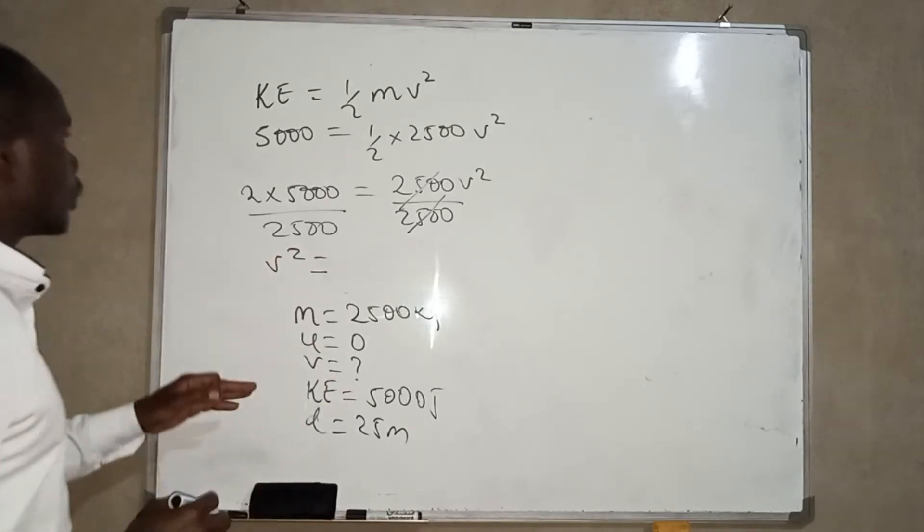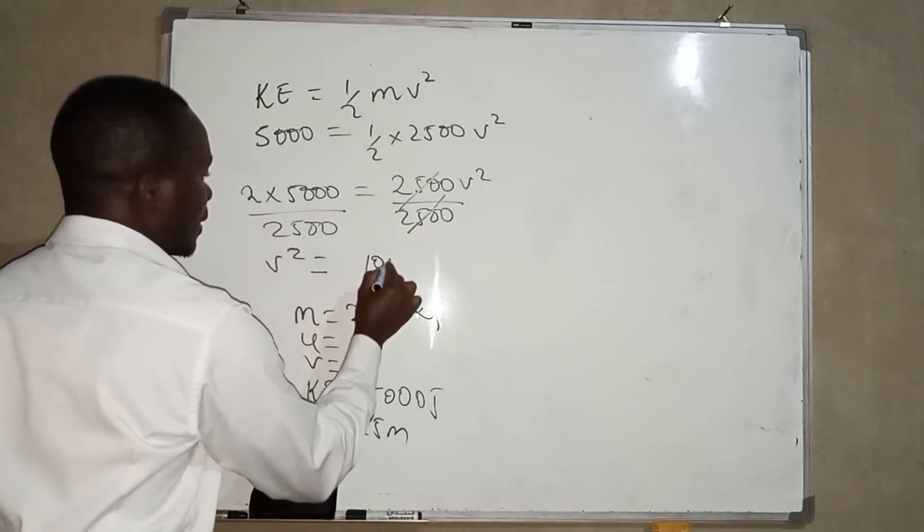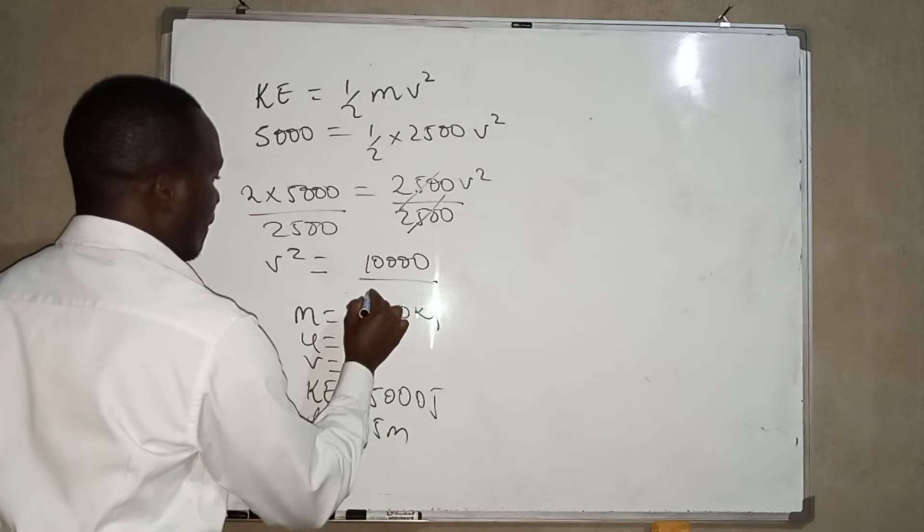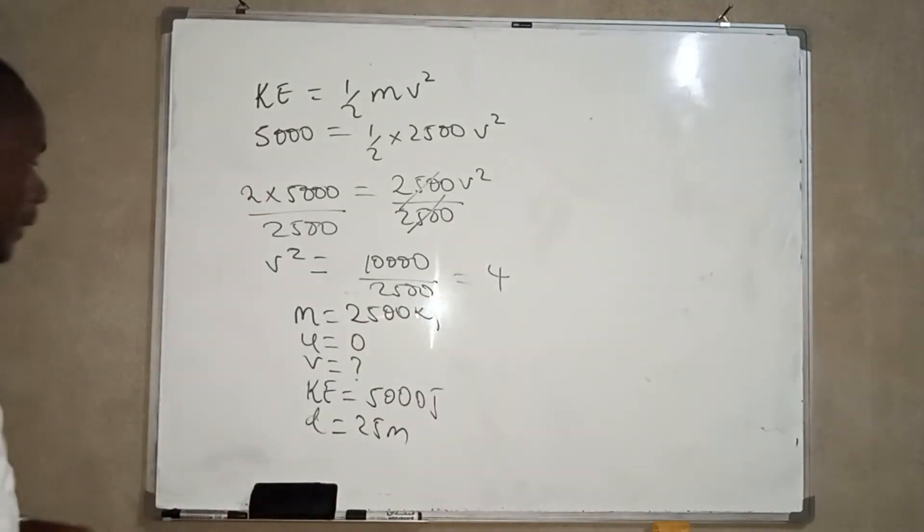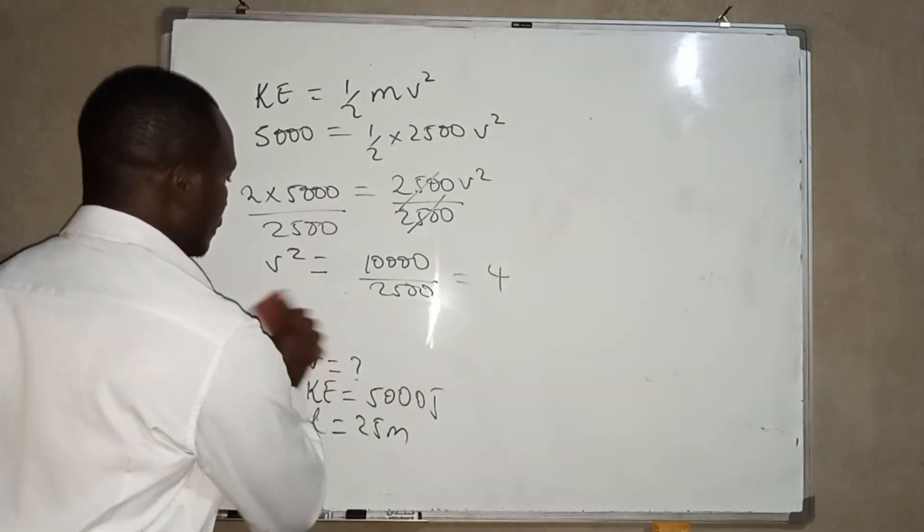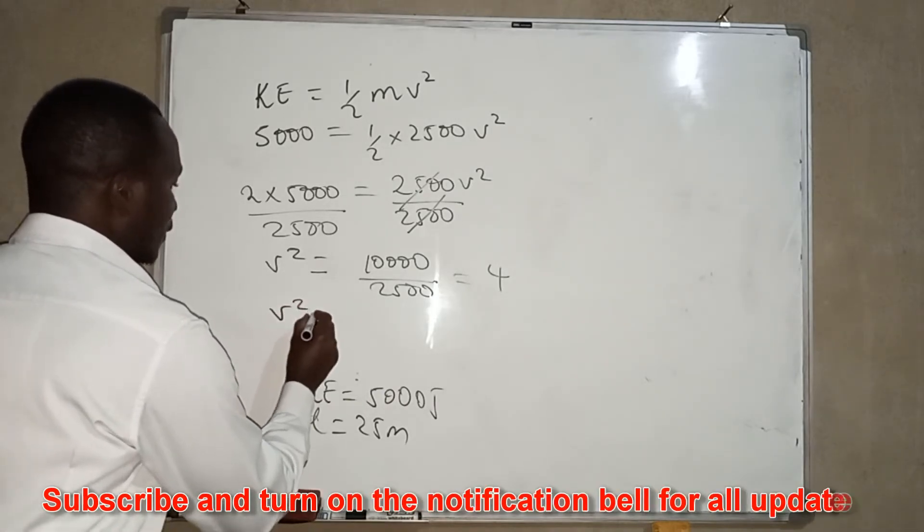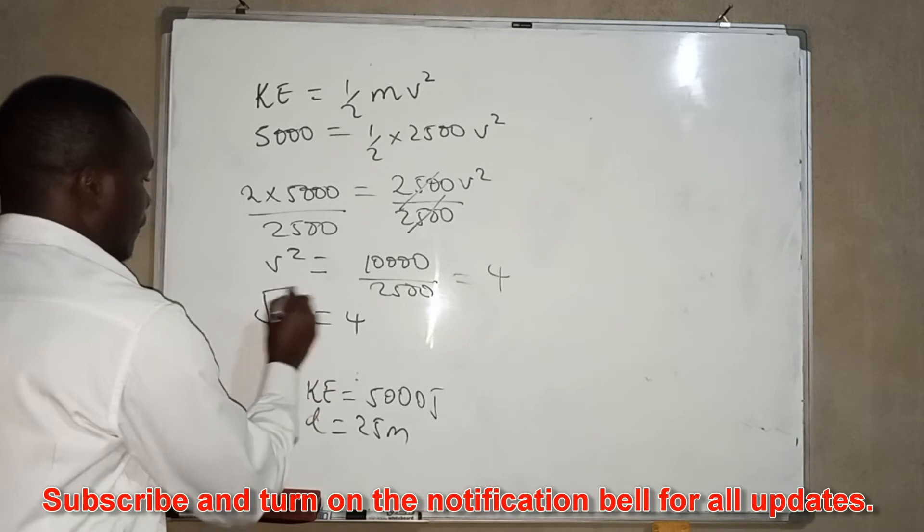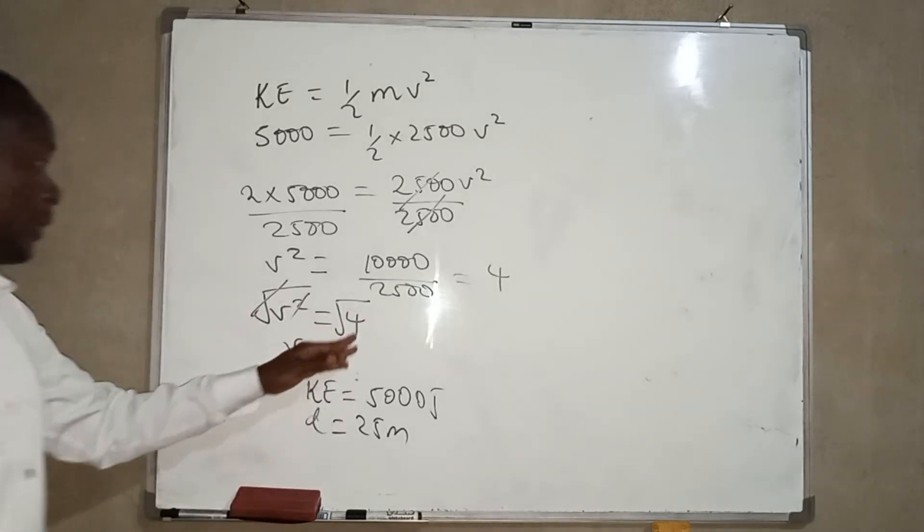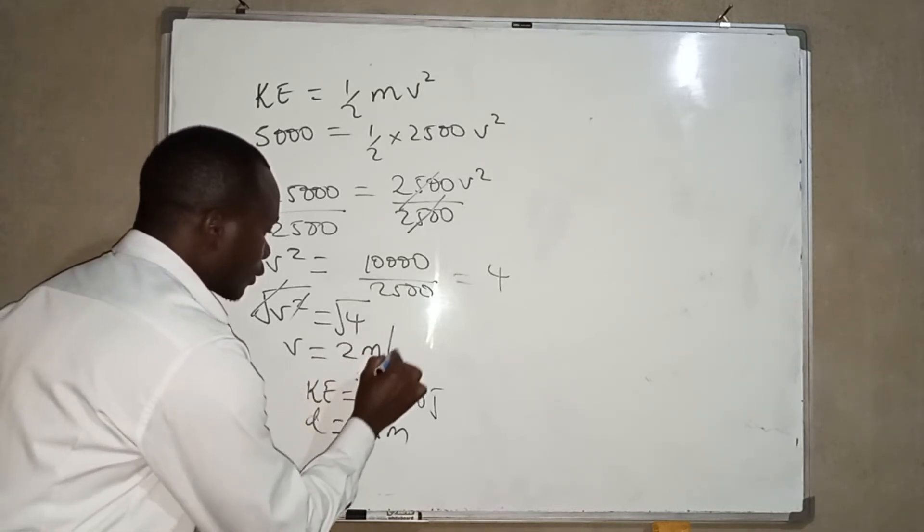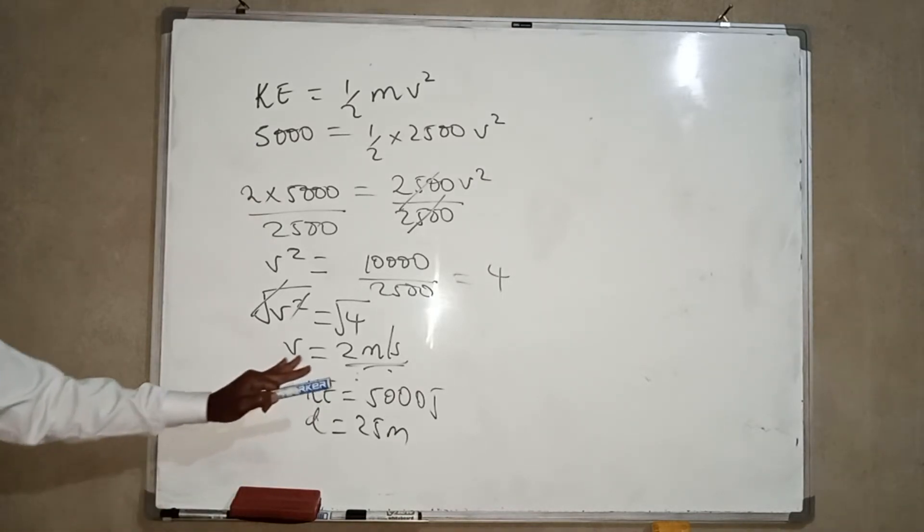So we can divide through by 2,500, and we are going to have V squared equals 10,000 over 2,500, which is 4. So V will be the square root of 4, which equals 2 meters per second. So this is the velocity.